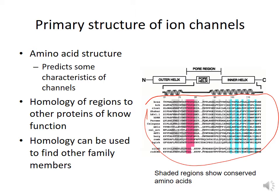You can see that this sequence has different amino acids, for example threonine, alanine, tryptophan, and so on. Some of those amino acids are well conserved among those different types of ion channels. In particular, this area of these ion channels — the sequence T, V, G, Y, G — you can see is very conserved among potassium channels. We're going to discuss the functional significance of this area of potassium channels in a later lecture.